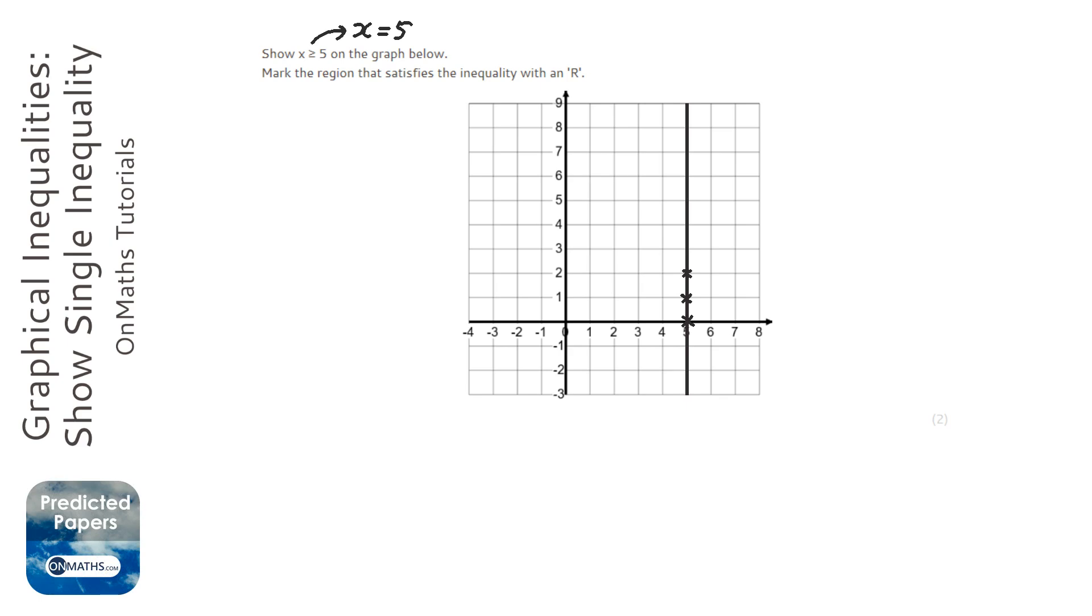And it's really important to remember which way around it is. Whenever you have x equals something, it's always a line from top to bottom. When you have y equals something, it's always a line from left to right.